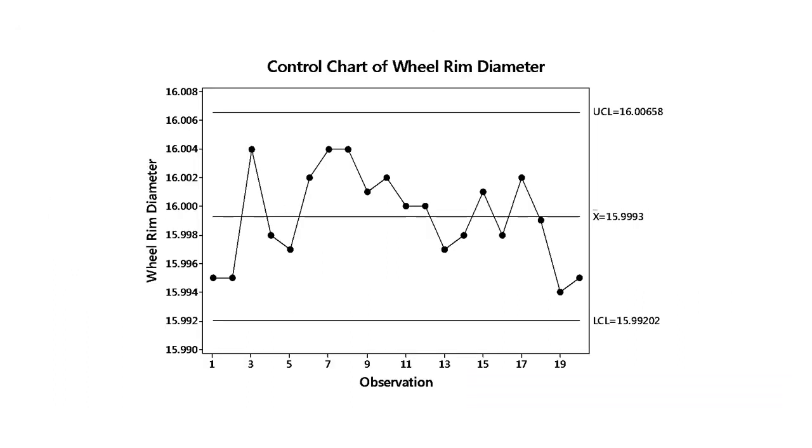A control chart plots the results of a process over time against three reference lines: a center line, an upper control limit, and a lower control limit. These lines are calculated from the data and reflect the central tendency and the spread of the measurement data. To illustrate, let's collect wheel rim diameter data from the wheel manufacturing process and use these data to create a control chart.